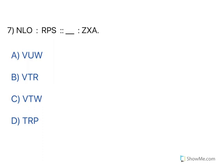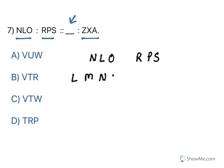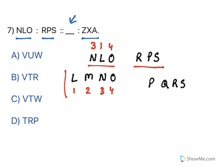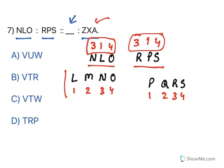Next one. What does it say? N, L, O to R, P, S, with a blank and then Z, X. You need to fill the blank. For such kind of questions, write the adjacent alphabets. For N, L, O: the alphabet set is L, M, N, O numbered 1, 2, 3, 4. So N=3, L=1, O=4 — pattern 3, 1, 4. For R, P, S: the set is P, Q, R, S numbered 1, 2, 3, 4. R=3, P=1, S=4 — again pattern 3, 1, 4. For Z, X, A: writing X, Y, Z, A as 1, 2, 3, 4 — Z=3, X=1, A=4 — again pattern 3, 1, 4.